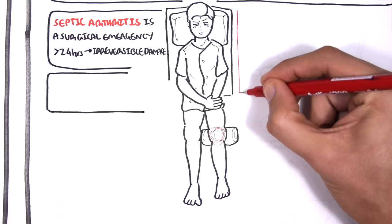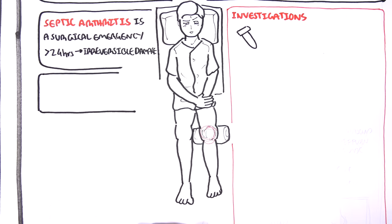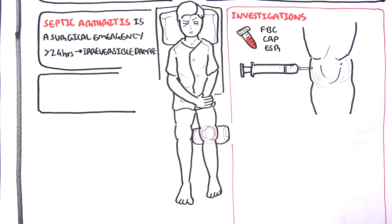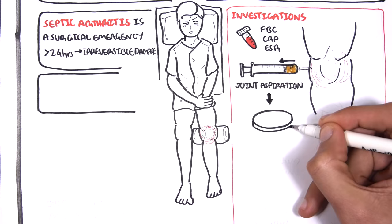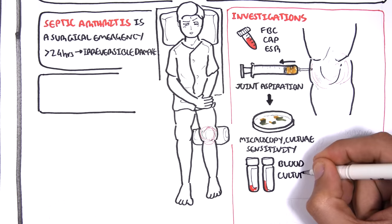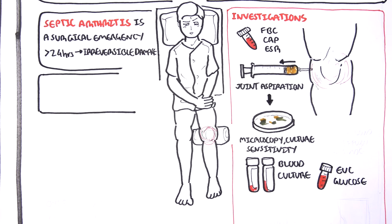Investigations for a person presenting with monoarthritis include a full blood count, C-reactive protein, and ESR to check for signs of inflammation and infection. A joint aspiration is usually indicated, and the aspirate will need microscopy, culture and sensitivity. Blood cultures should also be performed if you suspect systemic infection or bacteremia. Also perform electrolytes, urea, creatinine, and glucose.